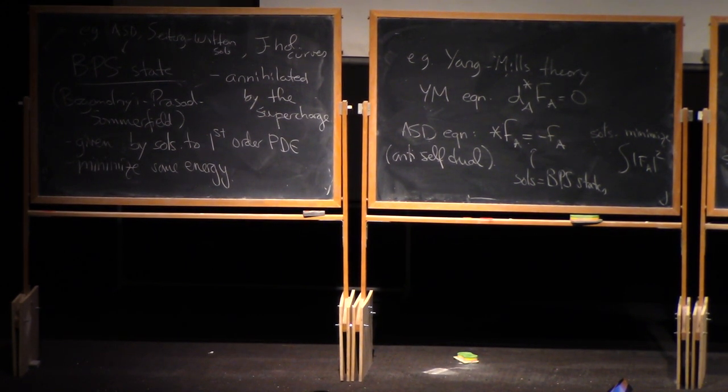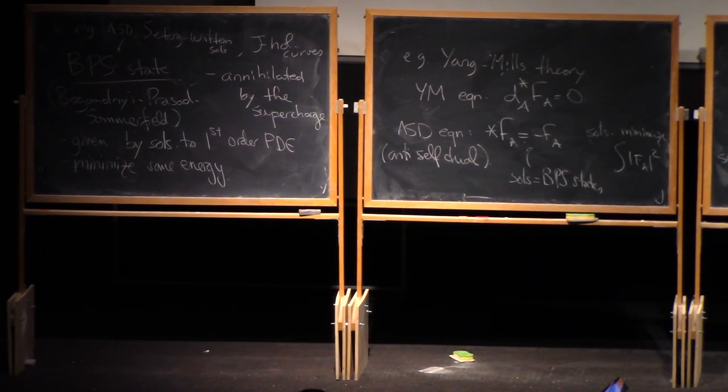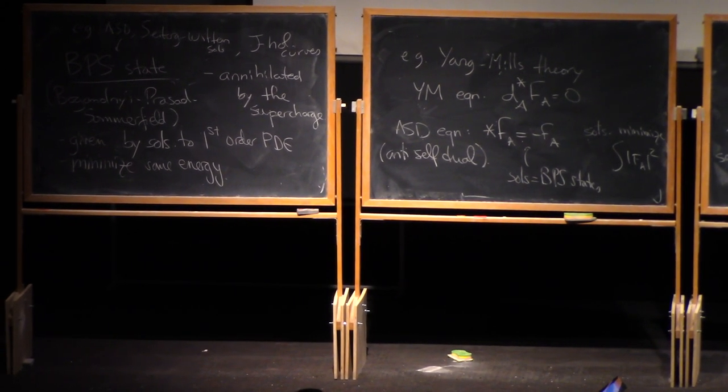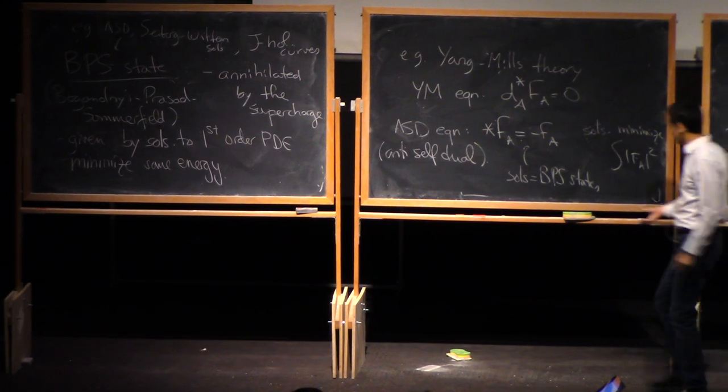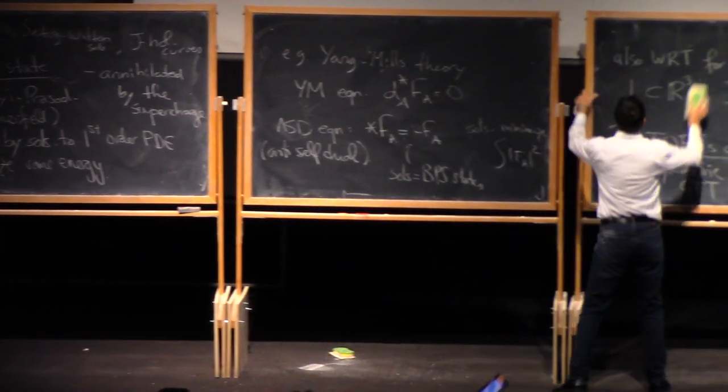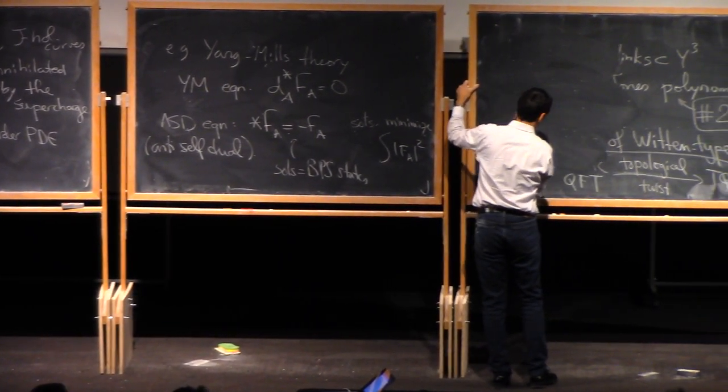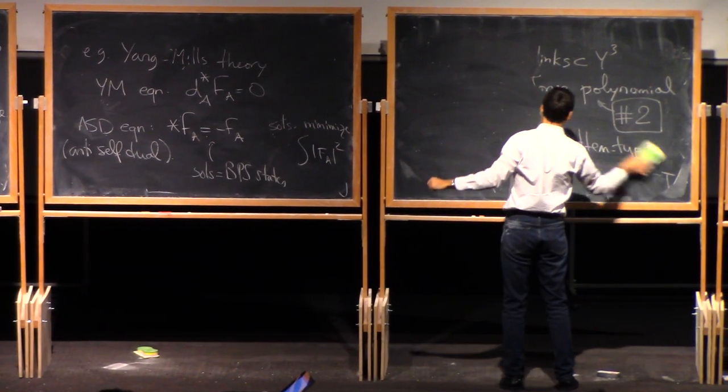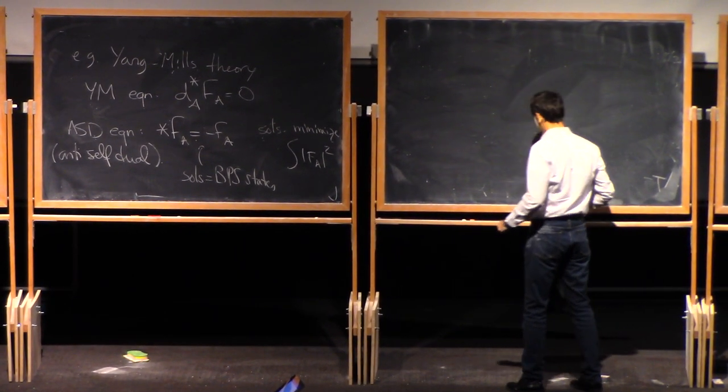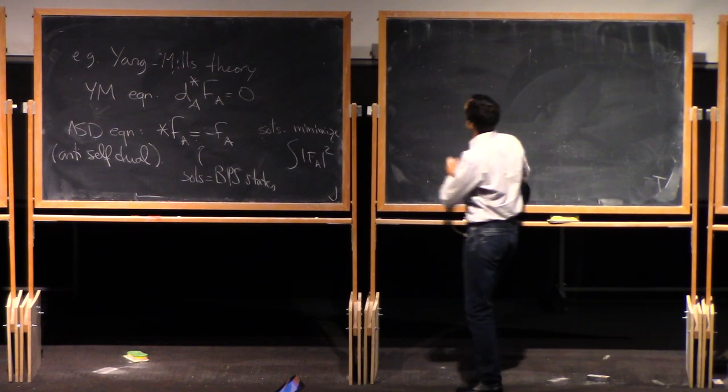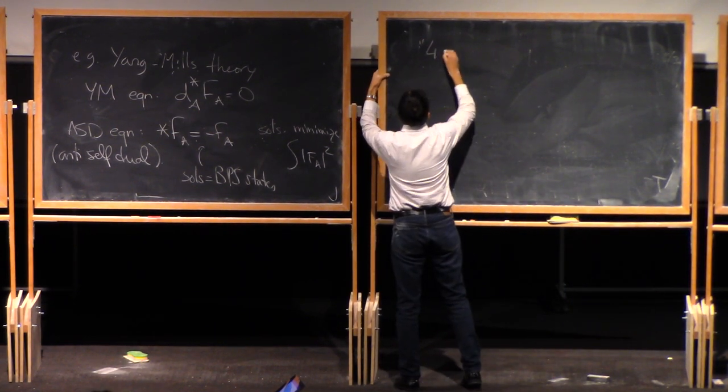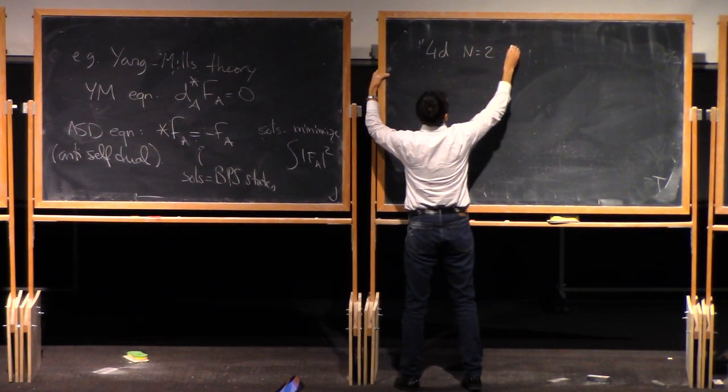So examples include, okay, so ASD, but also Seiberg-Witten solutions. And also, if you like symplectic geometry, then J holomorphic curves. These are maybe the most common, but in some of the lecture series you'll see other BPS states. They depend on the theory.